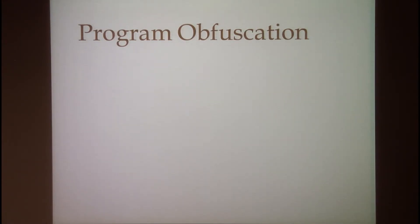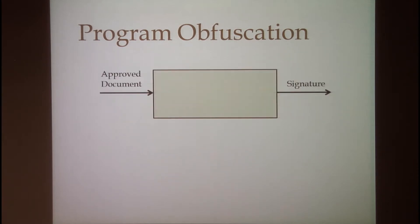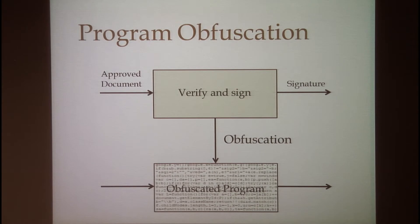The task of program obfuscation is to write programs in a way that hides their secret implementation details. Consider a program that has some secret key for a signature scheme, and it uses it to sign approved documents. We may want to find an obfuscated version of this program that has the same functionality, but still no one can use this obfuscated program to sign unapproved documents.